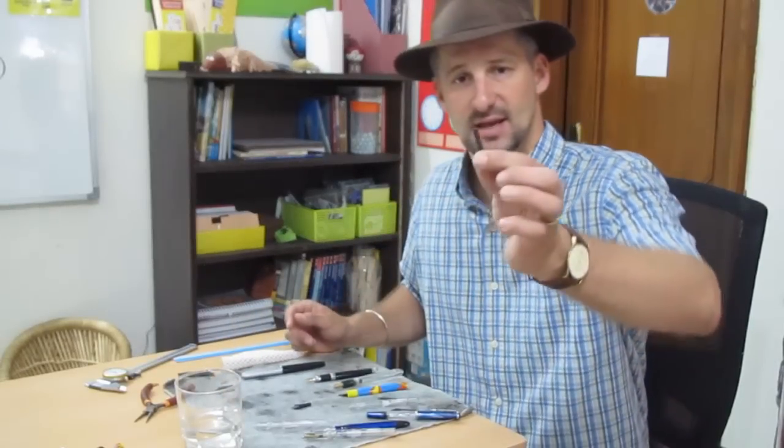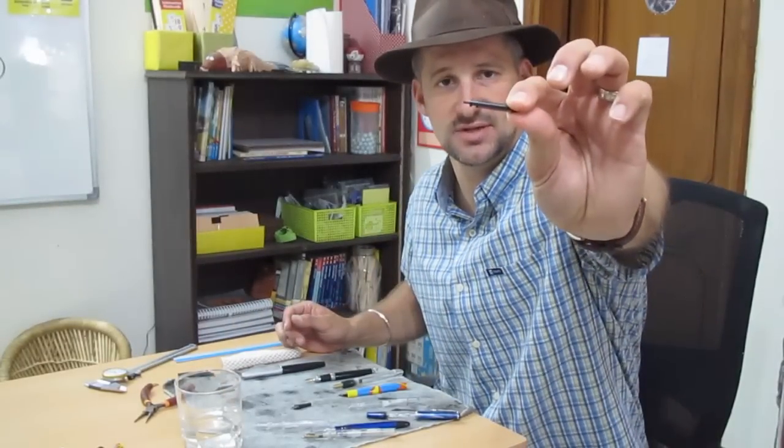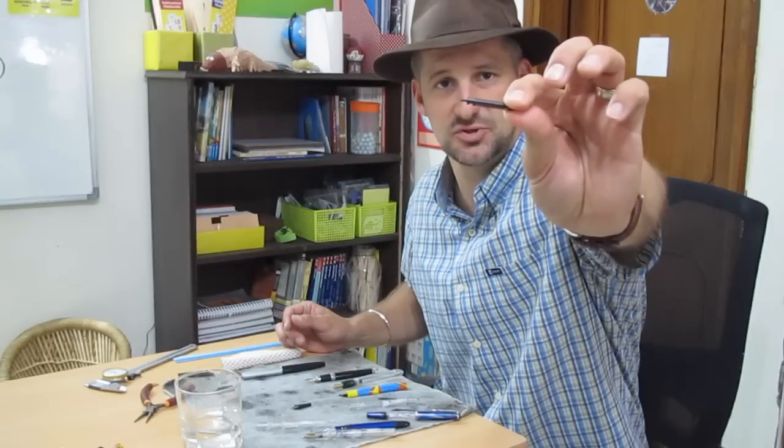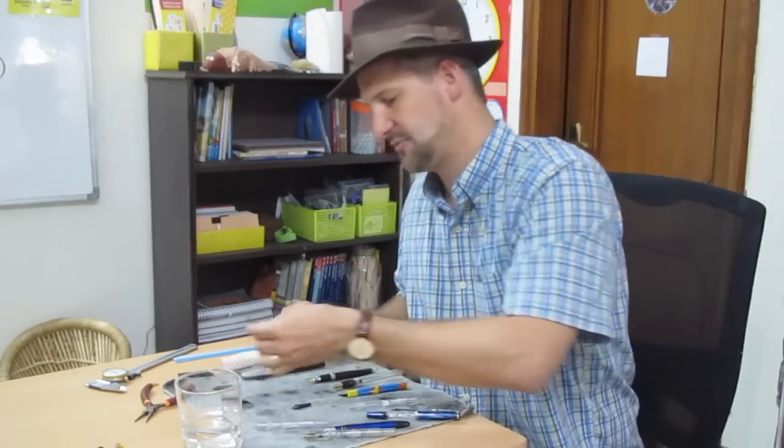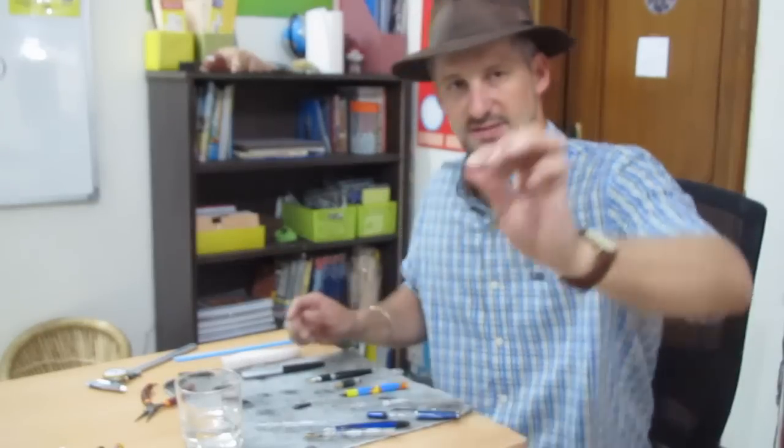We have plastic feeds like this. And you can tell it's a plastic feed because it has a little tail on the end like this feed does. And we also have ebonite feeds. It's a hardened rubber and these are flat on the bottom like this feed.